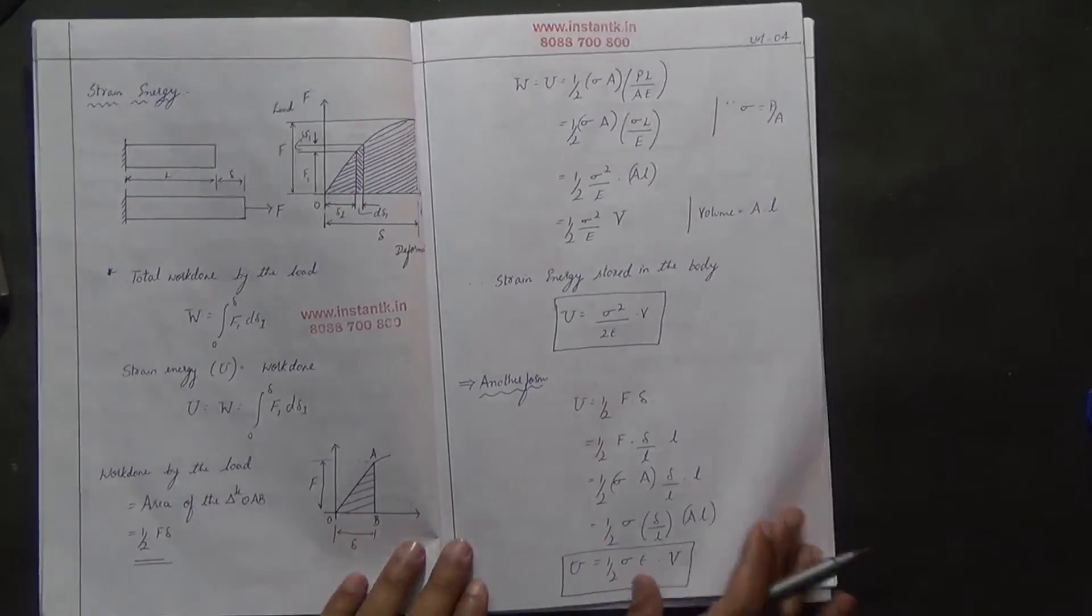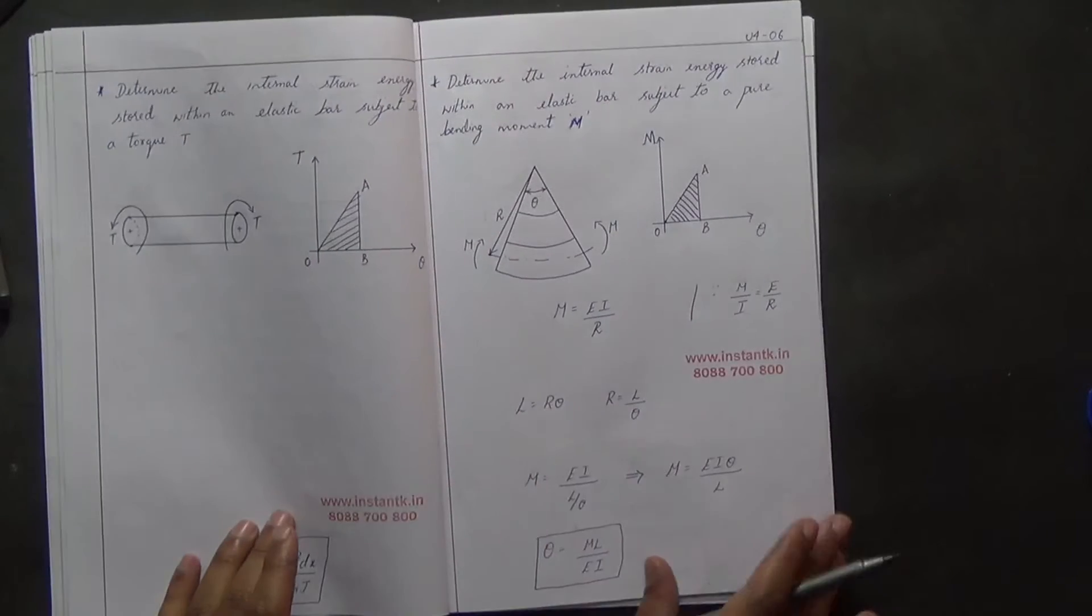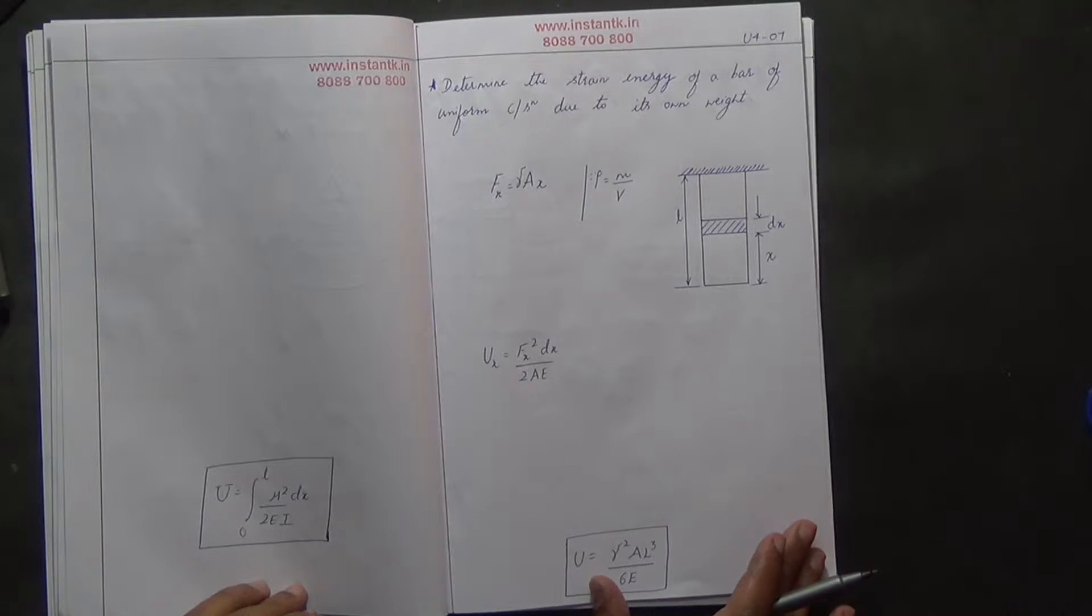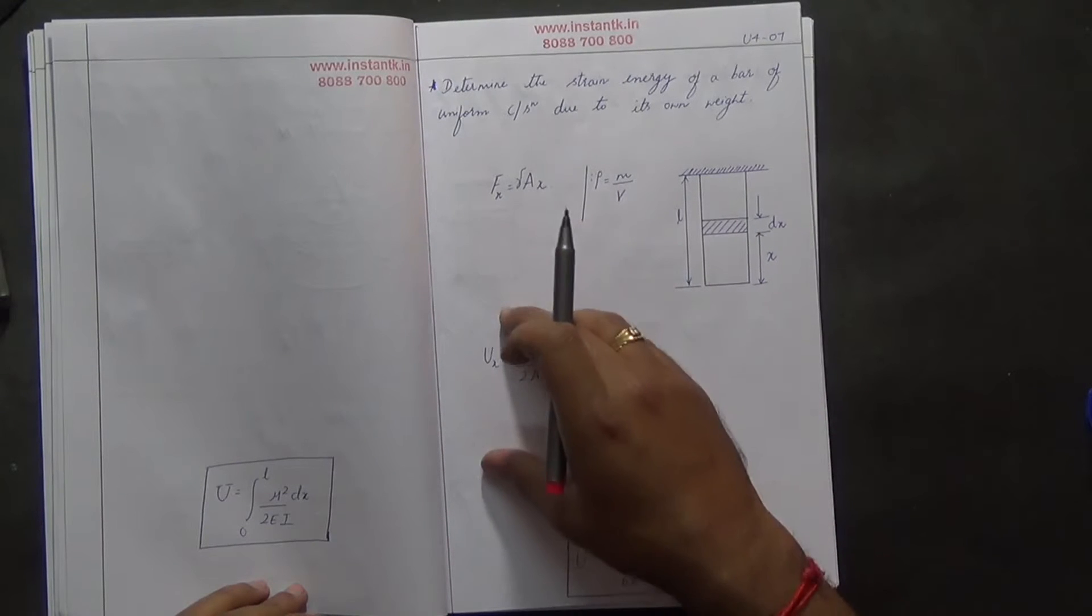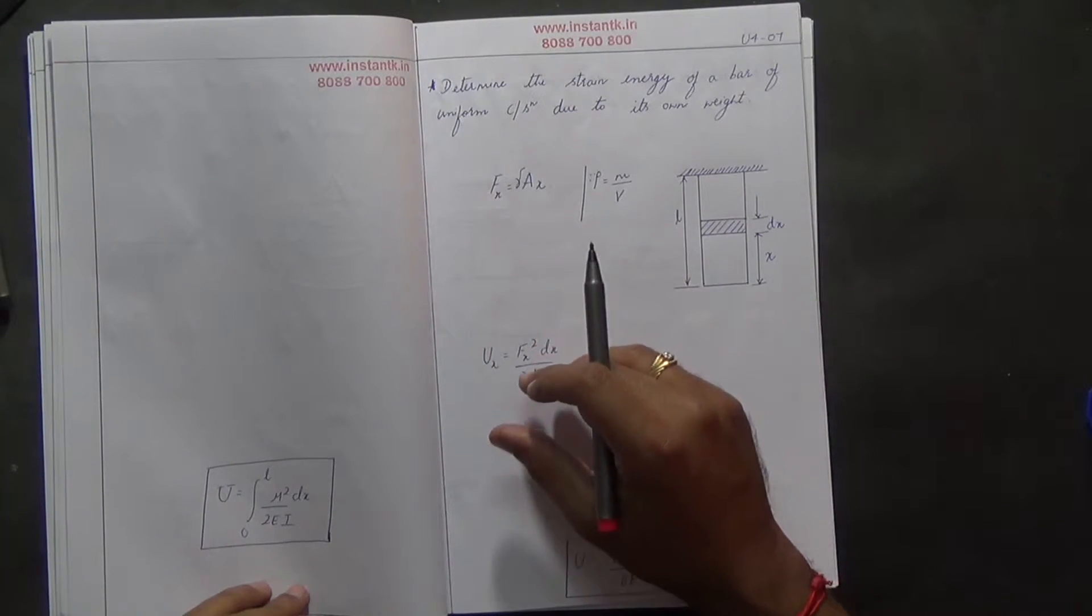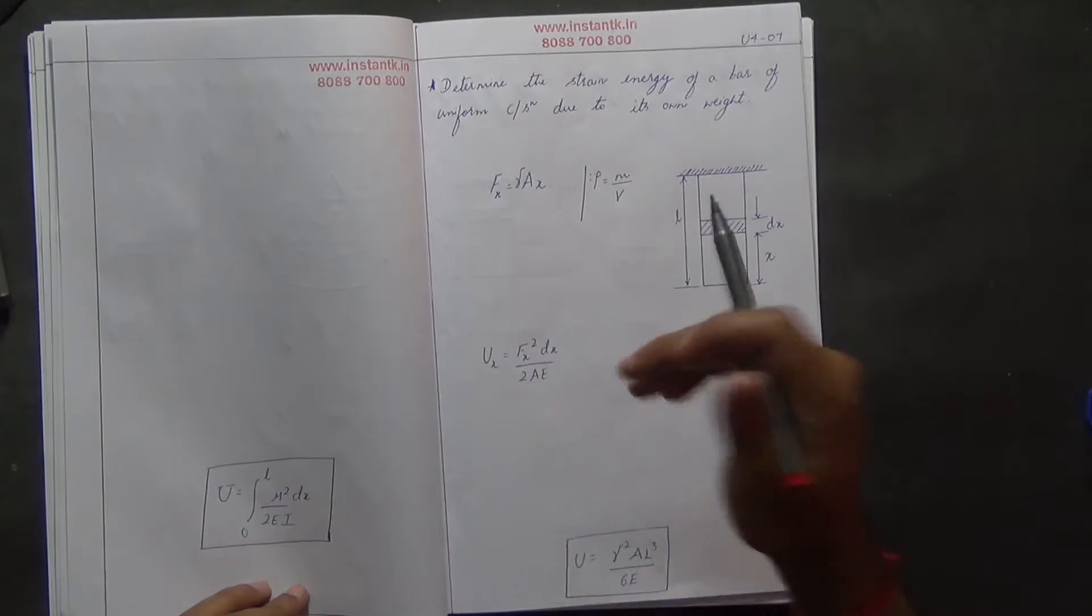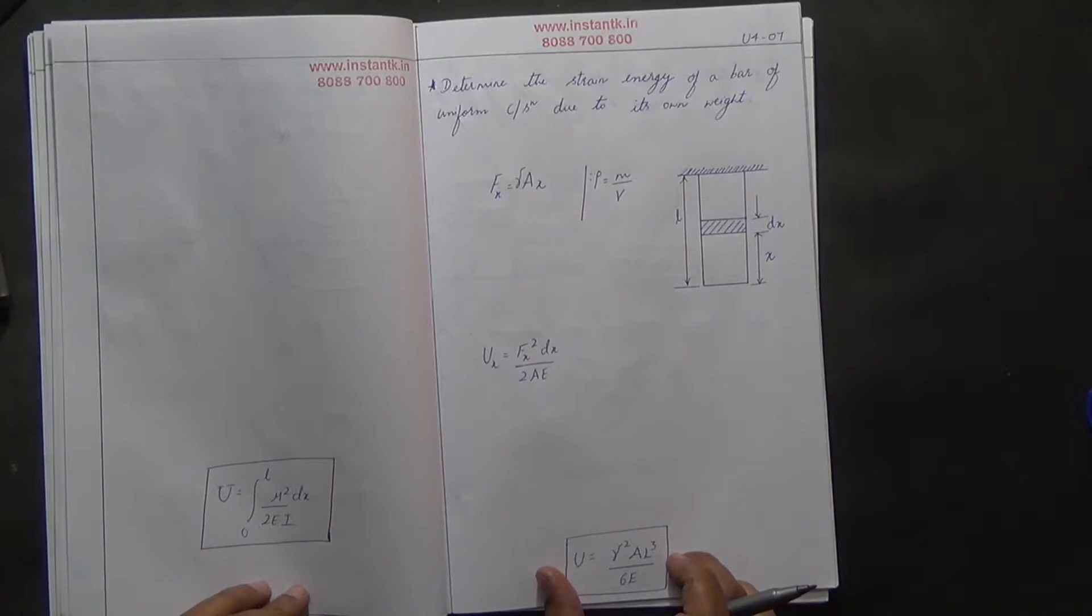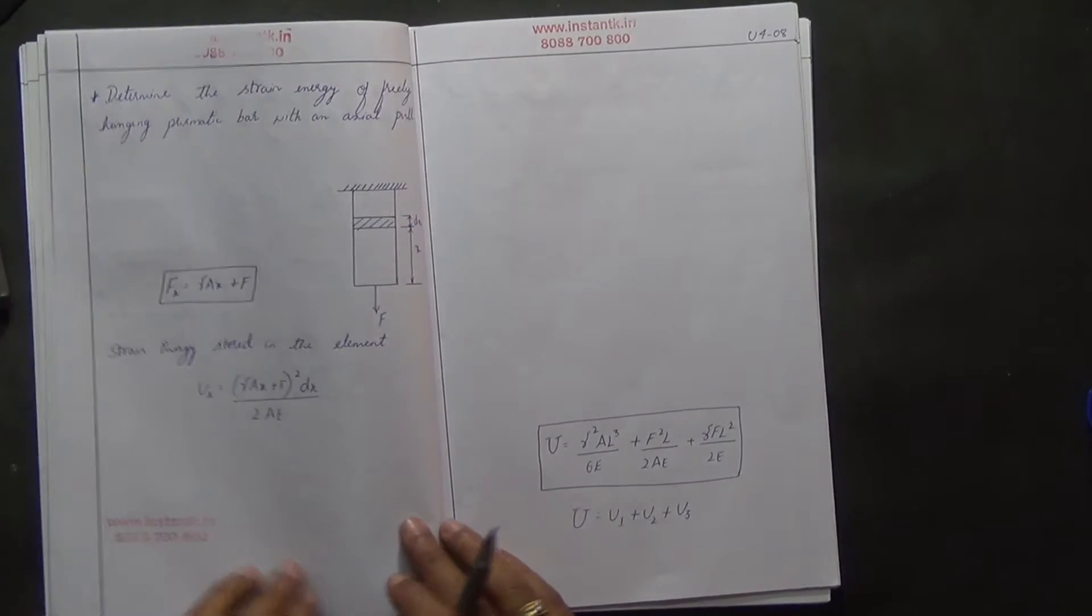The worksheet consists of important figures and the final formula. In between, space is given for you to write whatever has been taught in the video. You can rewrite it in your own hand so that it will help you. The reason I've given you the last derivation is that it's what you must arrive at by the end of the problem or derivation.